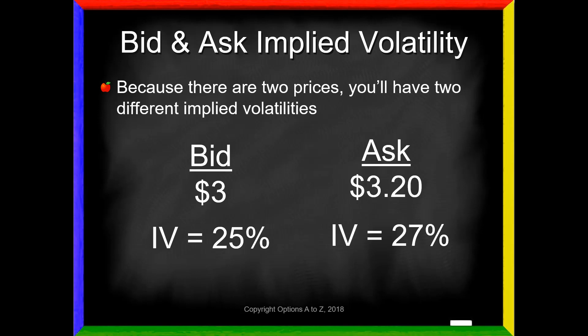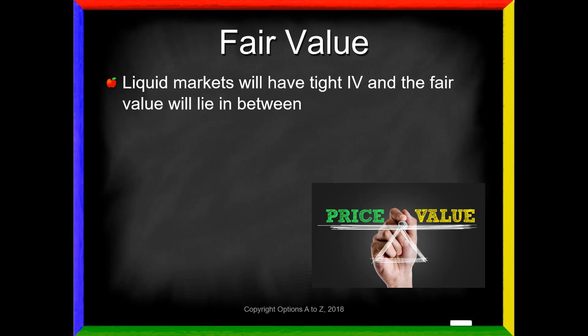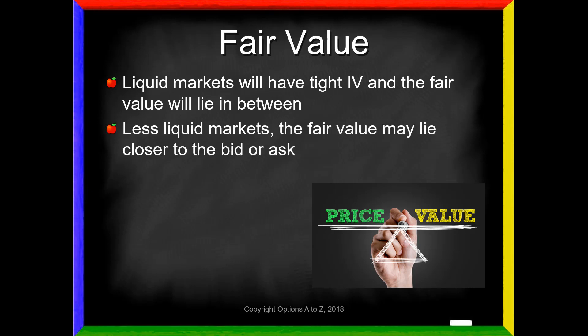The fair value — the price at which the buyer and seller are expected to break even in the long run — generally falls right between the bid and the ask, at what's called the mark or the midpoint. If you have liquid markets, you will have very tight implied volatilities between the bid and the ask, and the fair value would be expected to lie right there in between. When you're looking at at-the-money options, or maybe a strike in or out from at-the-money, you're going to have very tight bid-ask spreads and the implied volatilities will be very close. But when you start going deeper in the money into less liquid markets, the fair value might lie closer to the bid or the ask — it's not necessarily going to be in between.